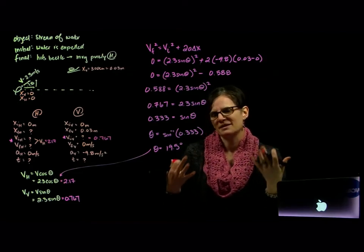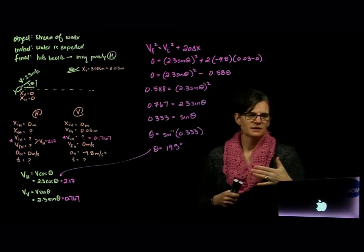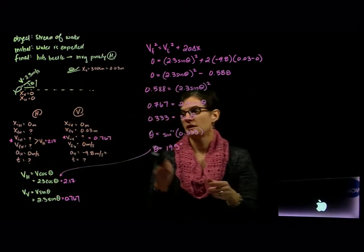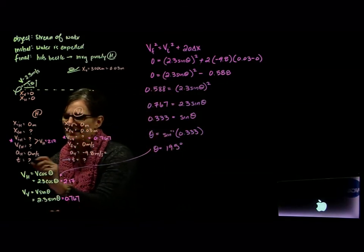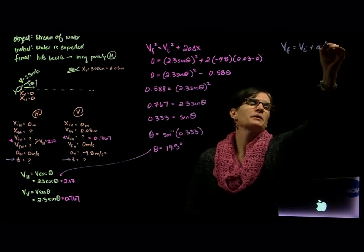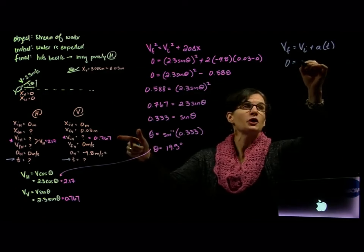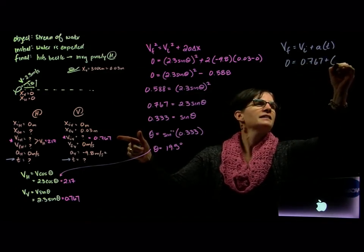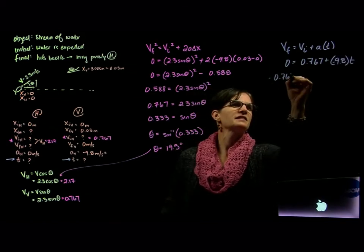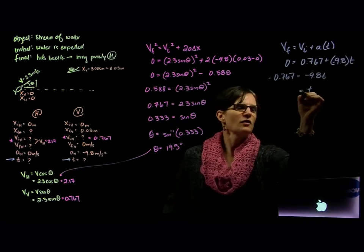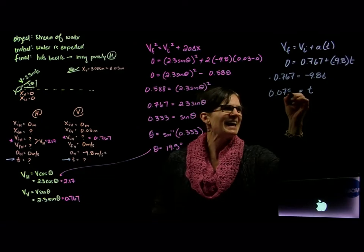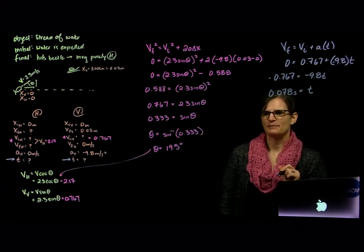The next part asks how much time does the beetle have to react. I'll use the vertical direction with v_final = v_initial + a·t. My v_final is 0, v_initial is 0.767, and acceleration is negative 9.8. Solving: 0 = 0.767 − 9.8t, so t = 0.767 / 9.8. That poor beetle has only 0.078 seconds to react — he must react very quickly.